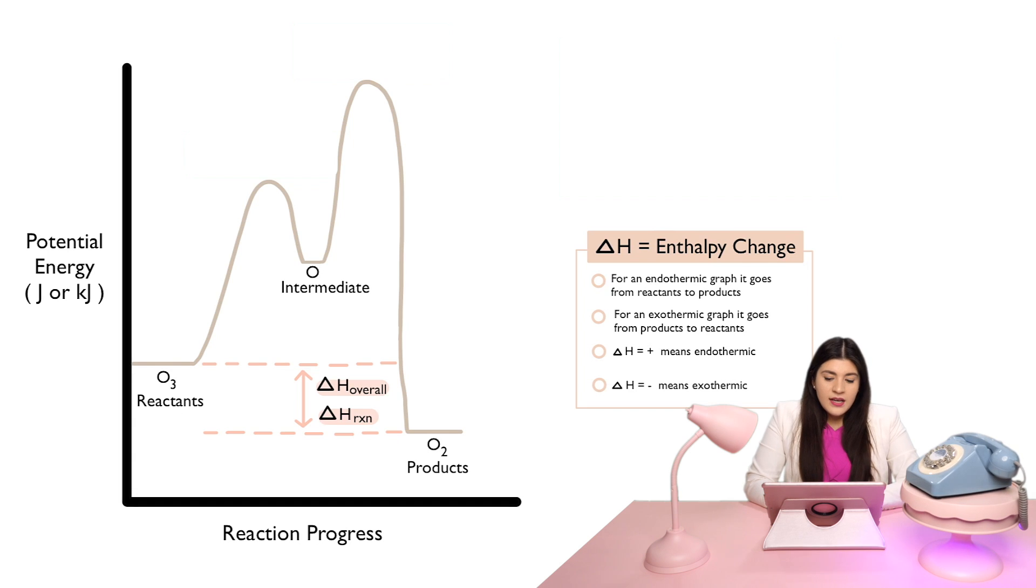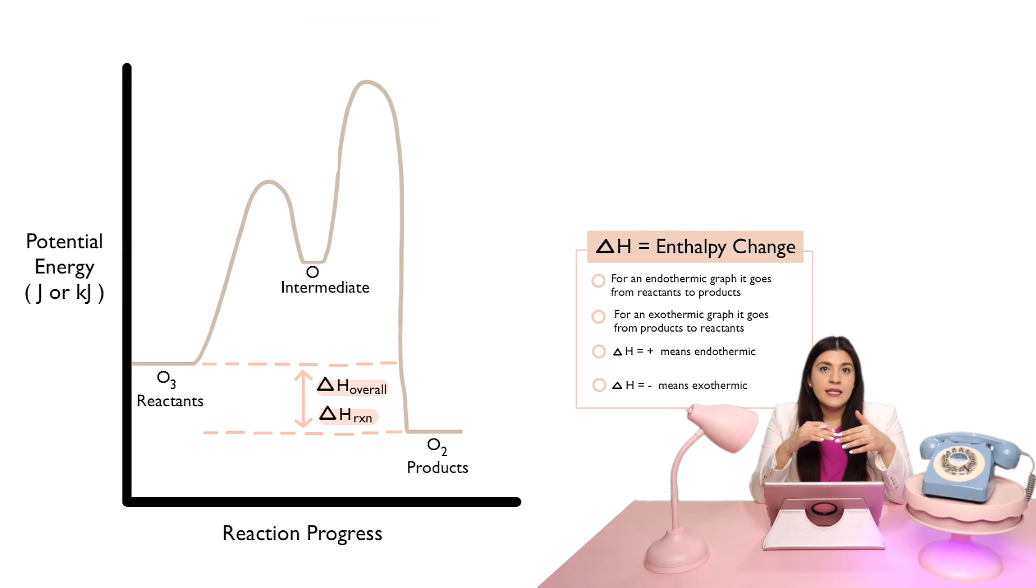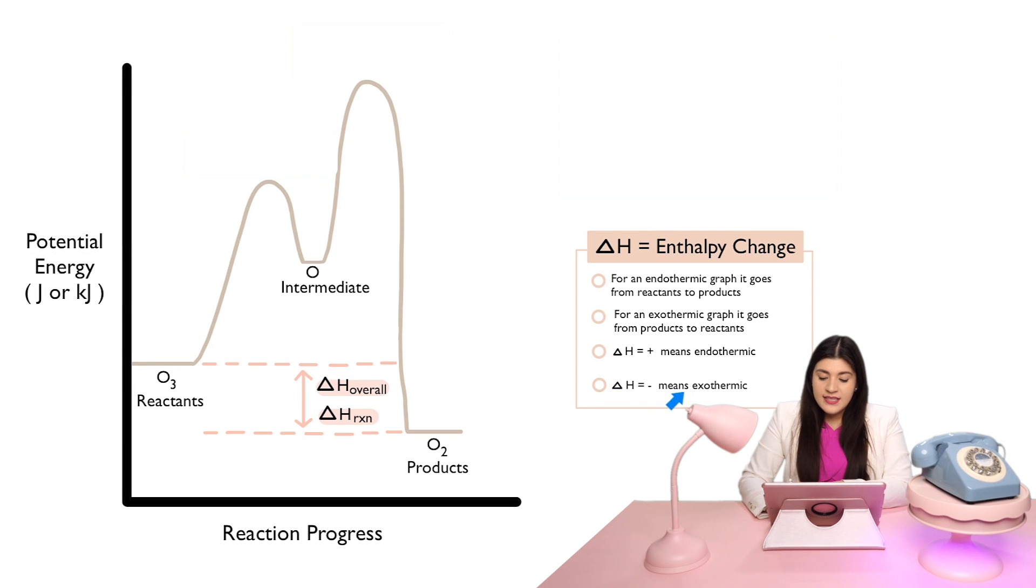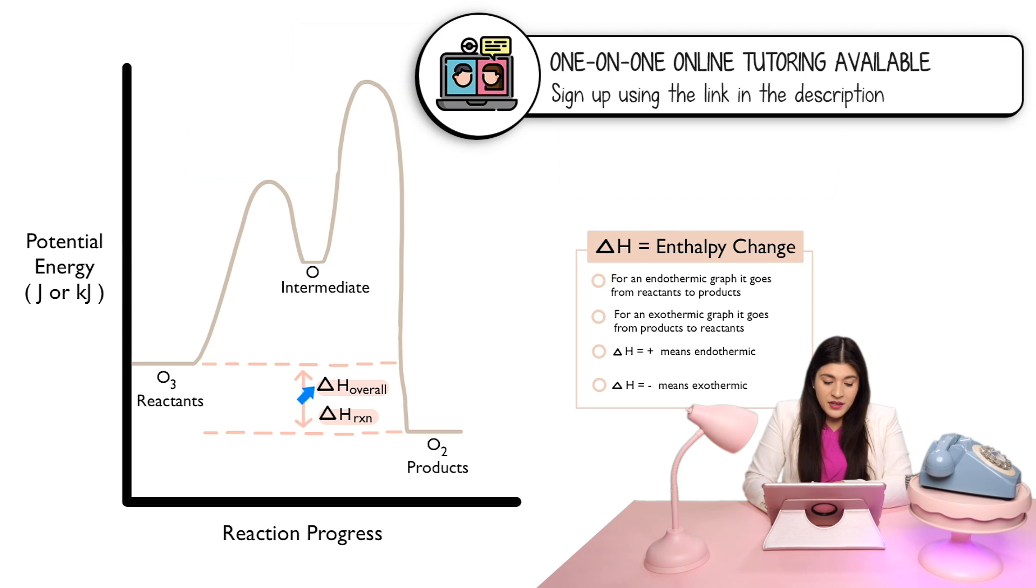Now, what this is describing is because we stated that this was an exothermic reaction. That tells me that heat is being released or energy is being released. So, if it's being released, then that means delta H is then negative because it's exothermic. So, this is going to give us a negative value since the energy of our reactants is larger than the energy of our products.